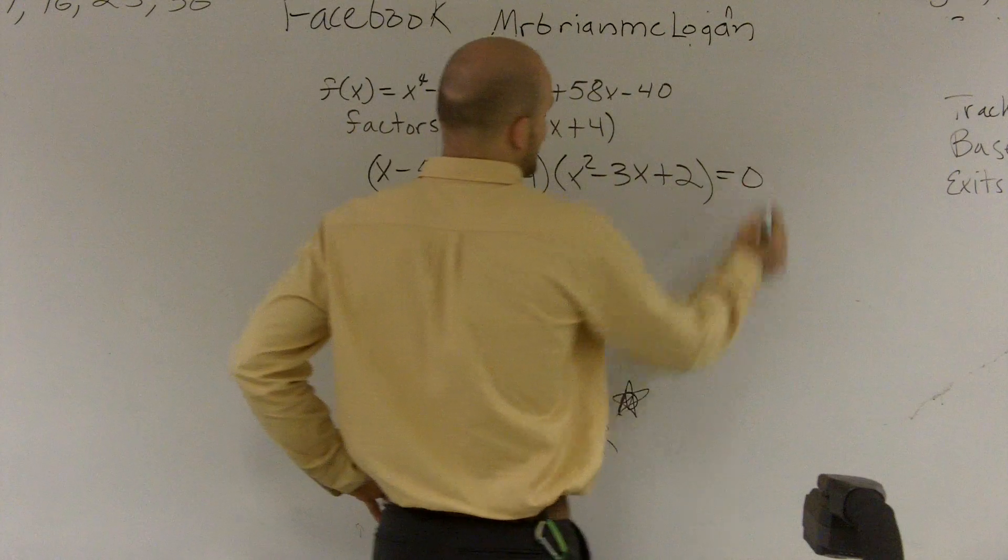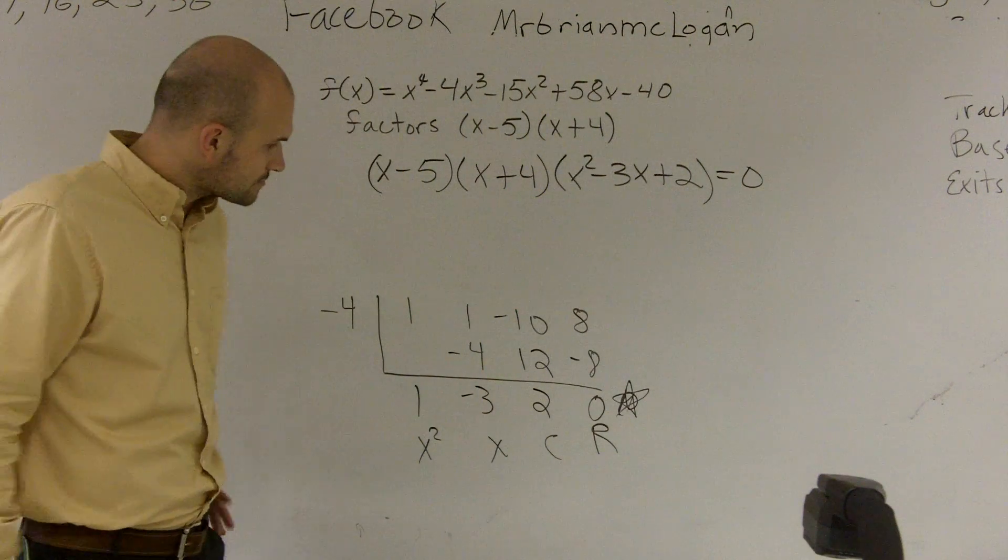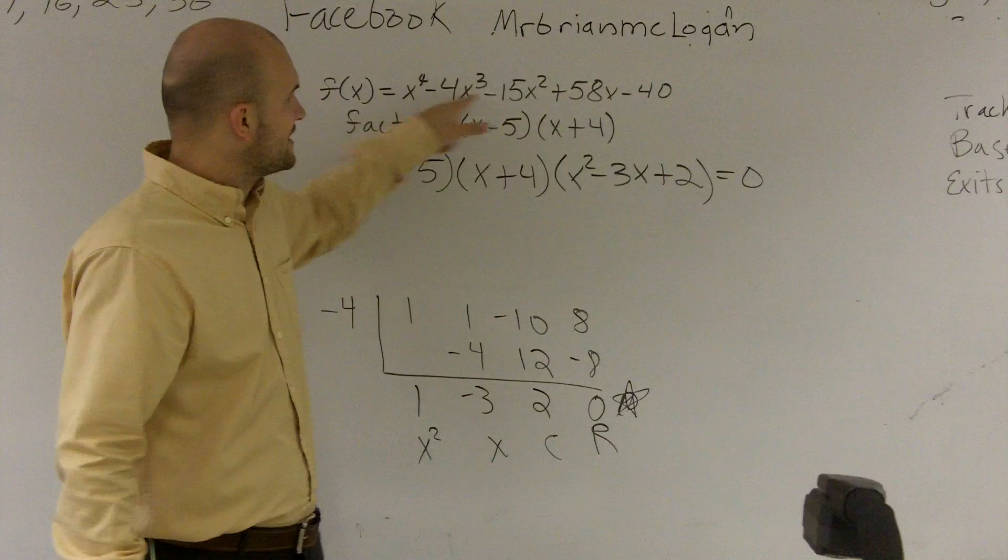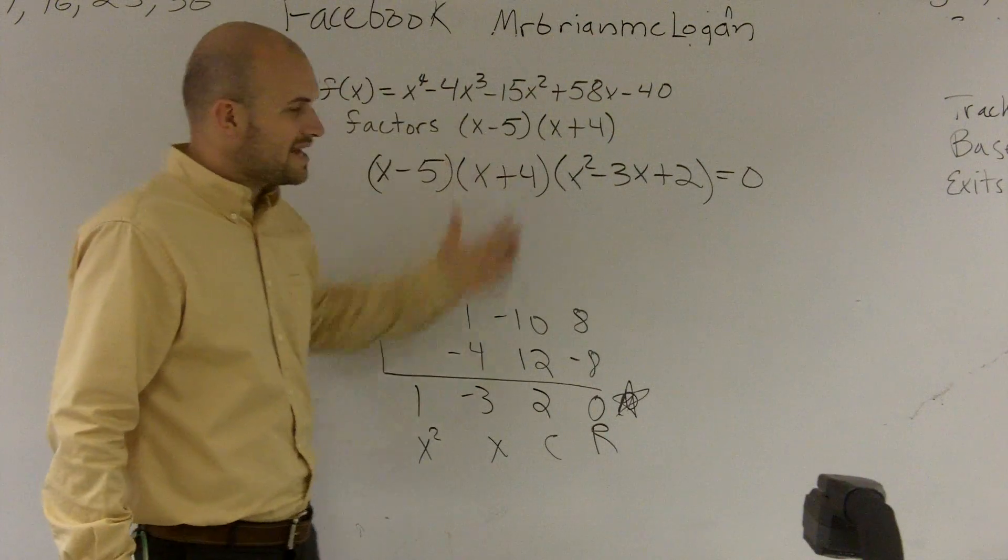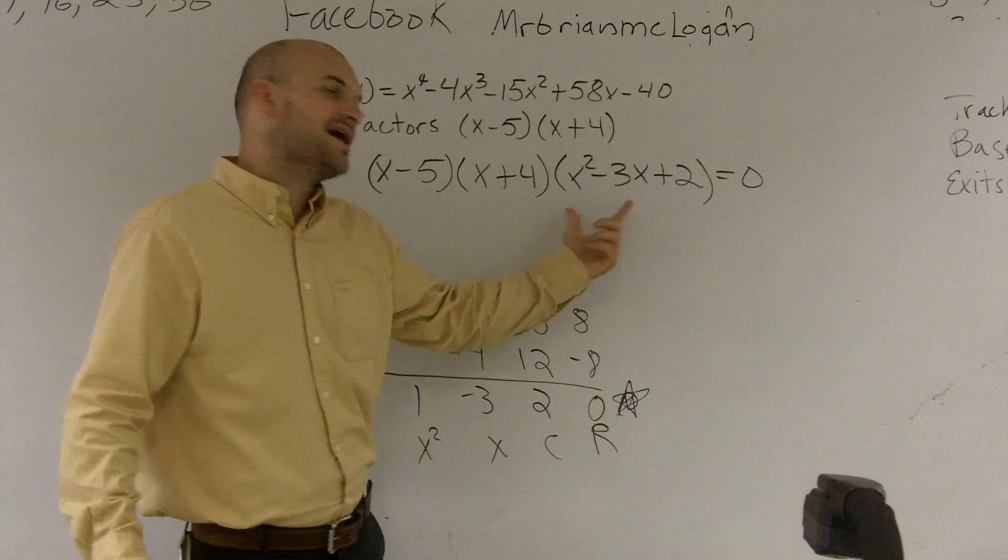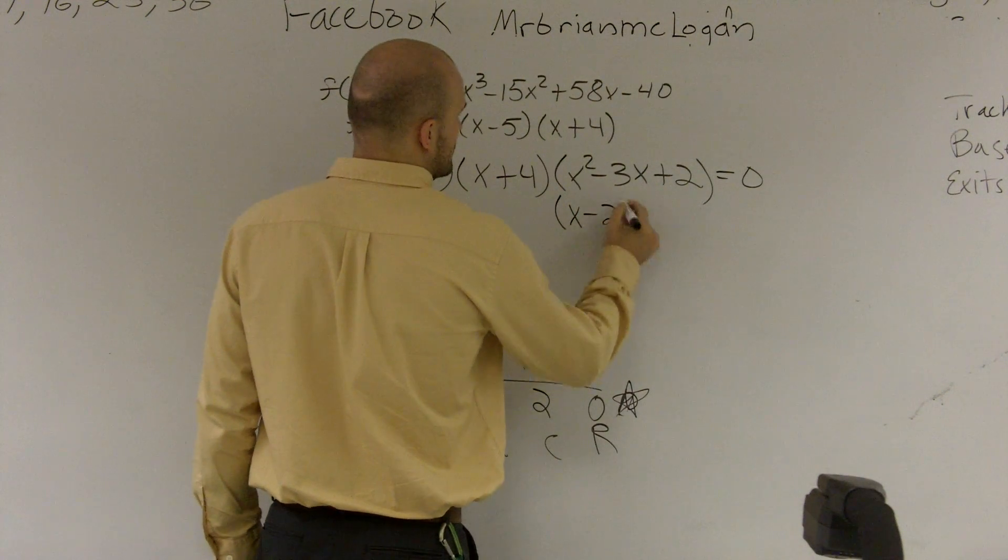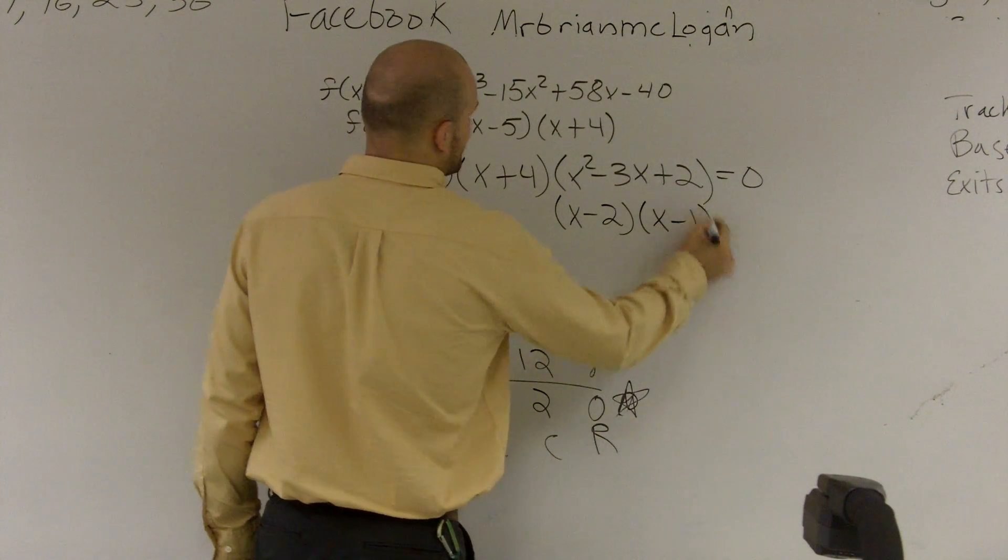And these are all factors, so they equal 0. And if I was to multiply all of this together, I would get this original function. Now, can we factor this any further down? Yeah, you can. You can write that as x minus 2 and x minus 1.